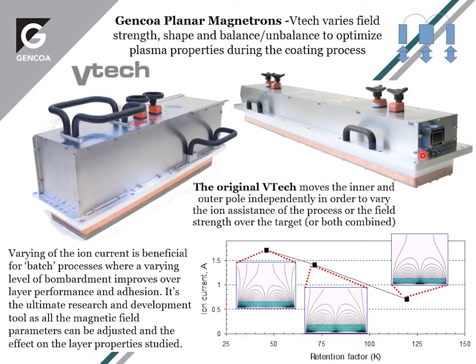The original V-Tech uses manual actuators to move the inner and outer poles separately. This shows one system between two settings: the process operates at 1.7 amps in one mode, then changes down to 0.7 amps for other parts of the process to create the optimum coating hardness, stress, and adhesion levels.